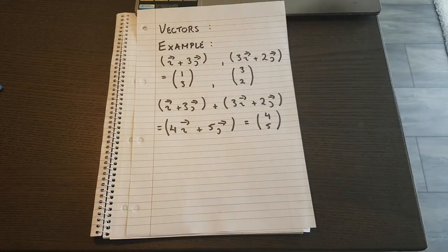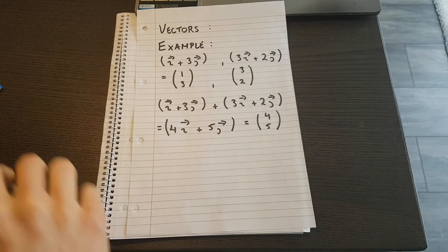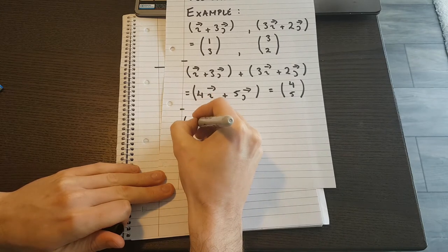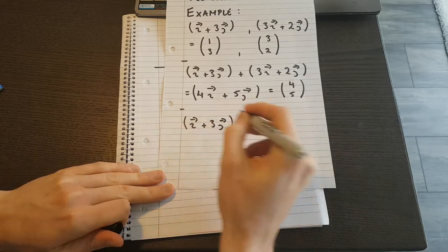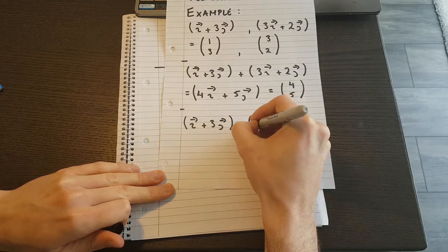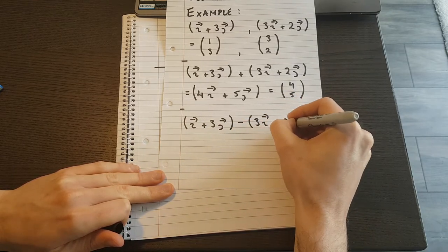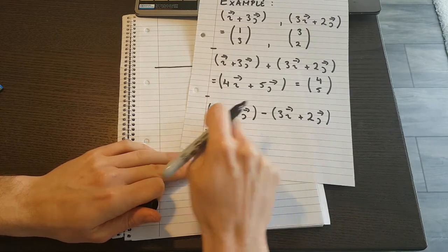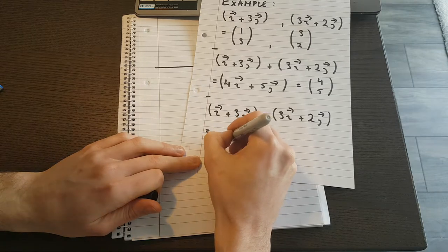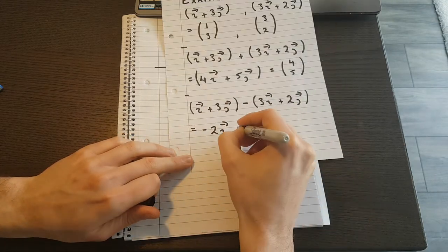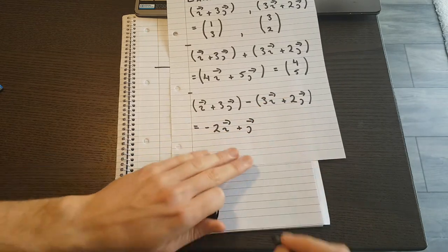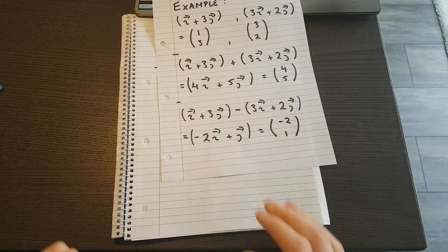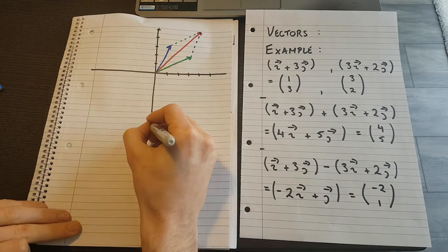Let me do a subtraction then. So this was my addition. What does subtraction look like? Well, if I have i plus 3j, and suppose I subtract away this one. What would I end up with there? Well, here I would have 1 minus 3 would make minus 2i. And I would have 3 minus 2, which is 1, so just 1 times a j. And that would be minus 2 and 1 if I write it in the column notation.